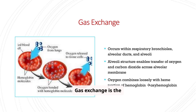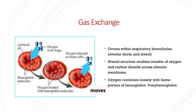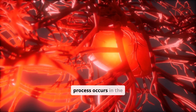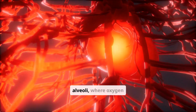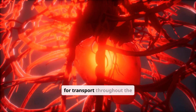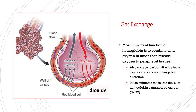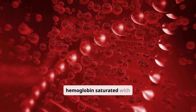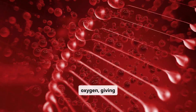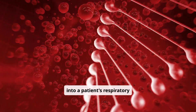Gas exchange is the cornerstone of respiration. Oxygen moves from the lungs into red blood cells, while carbon dioxide moves out. This vital process occurs in the alveoli, where oxygen binds to hemoglobin for transport throughout the body. A pulse oximeter measures the percentage of hemoglobin saturated with oxygen, giving us a crucial insight into a patient's respiratory status.